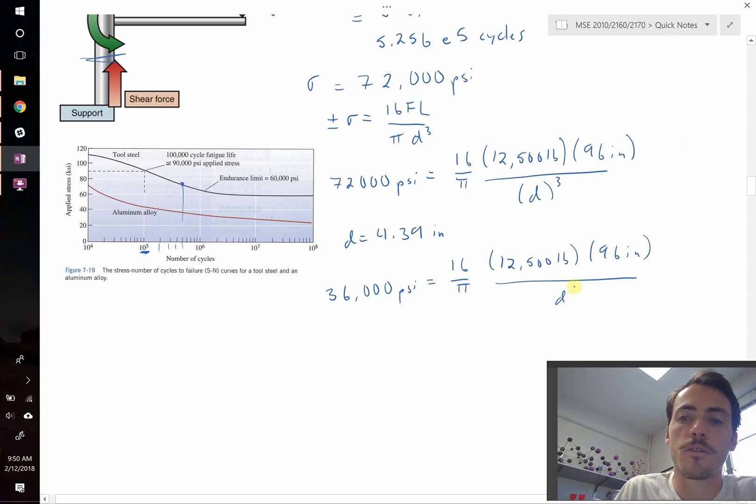And this time, plugging in and solving for the diameter, we find that it's equal to 5.54 inches. So just going from 4.39 inches to 5.54 inches builds in a safety factor of 2 in this experiment. And that's how you use these S-N curves.